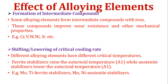Third effect: formation of intermediate compounds. Sometimes when alloying elements are added to the base metal of steel, they form some intermediate compounds with the ions. These compounds improve wear resistance and other mechanical properties. Examples of such elements are chromium, vanadium, nickel, silicon, etc.